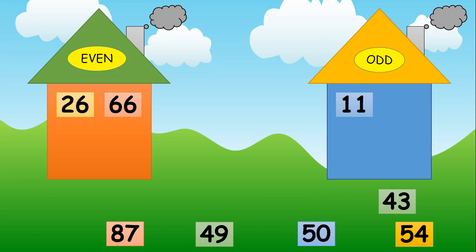Well done my kids. Now look at the number 43. Look at the ones place. Which digit is in the ones place? Yes, 3. So 3 is an even number or odd number? Remember the song: 1, 3, 5, 7, 9 — and these numbers are the odd. Yes, odd. So the number 43 we will place in the odd house. Let us do some more numbers. Look at the number 87. Which digit is in the ones place? Yes, 7. So 7 is an odd number. So the number 87 we will place in the odd house.